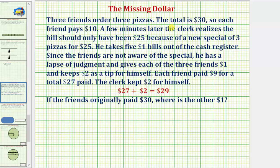Three friends order three pizzas. The total is $30, so each friend pays $10. A few minutes later the clerk realizes the bill should only have been $25 because of a new special of three pizzas for $25.